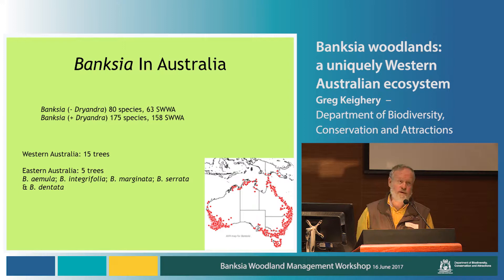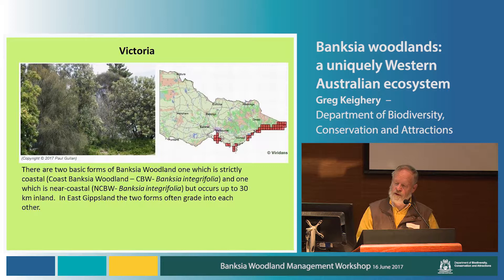The AVA map there — the speckled red dots — gives you the general distribution of Banksia across Australia, and you can see that it just sneaks outside Australia. We have 15 species of Banksia, all true Banksias in WA, that are trees. And in Eastern Australia, there are in fact five that can form trees, but they're a pretty poor cousin to ours.